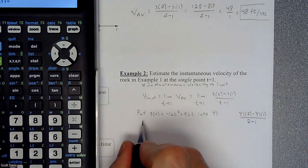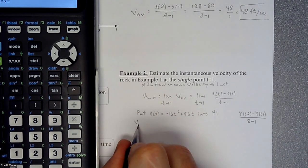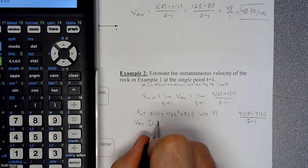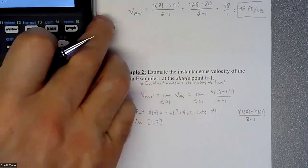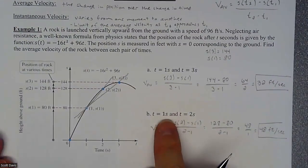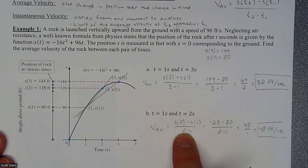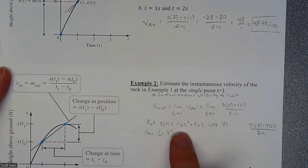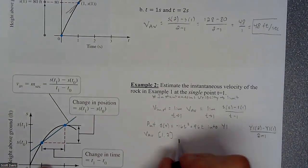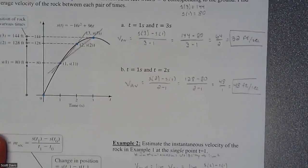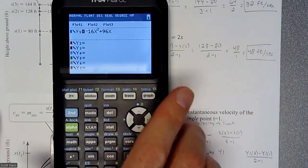So if our interval goes from 1 to 2, we're computing the average velocity from 1 to 2, which we already did. We're using the calculator to help our cause, and we already know our answer is supposed to be 48 feet per second.